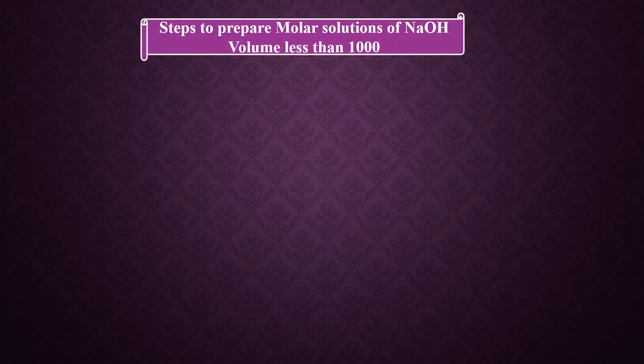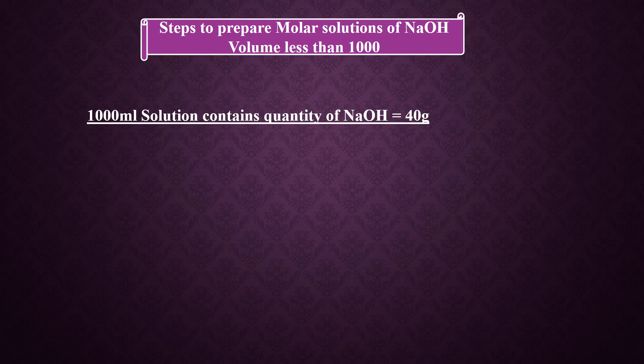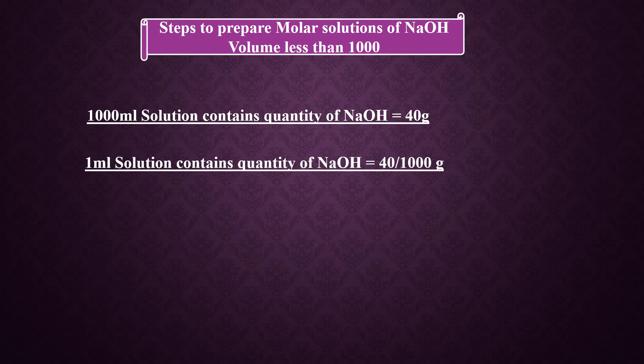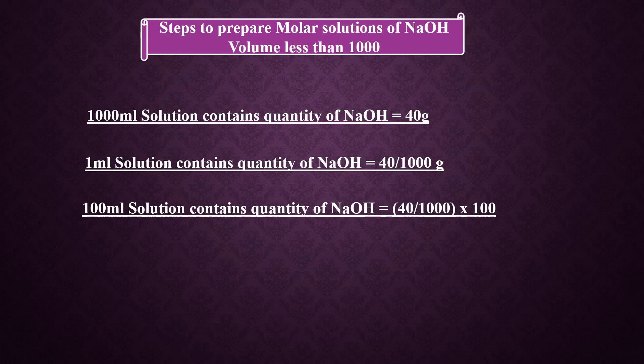Let's revise the 4 steps again. Step 1: 1000 milliliters of solution contains 40 grams of sodium hydroxide, its molar mass. Step 2: 1 milliliter contains 40 divided by 1000 grams. Step 3: Multiply by the required volume — this can be 100, 200, 250, 500, or 750 milliliters, according to requirement. Step 4: Multiply the result by the given molarity.